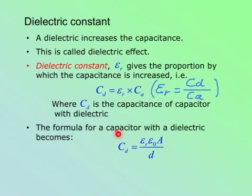And the formula for the capacitor with the dielectric becomes this. CD is the capacitance with dielectric, A is the area, D is the distance between the two plates, and these two are constants.